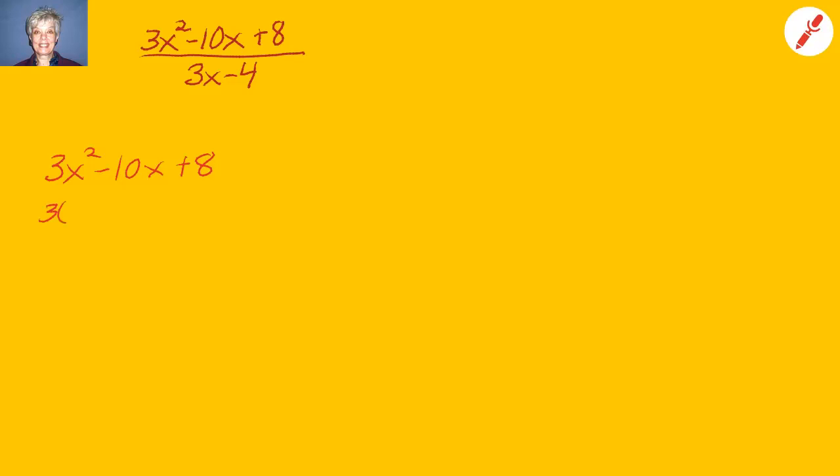3 times 8 equals 24. 24 breaks down into 4 times 6, but it also breaks down into negative 4 times negative 6. But negative 4 plus negative 6 equals negative 10. So I know that negative 4 and negative 6 are the two factors that I want to be able to factor 3x squared minus 10x plus 8. So here we go.